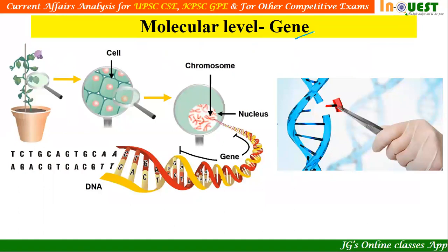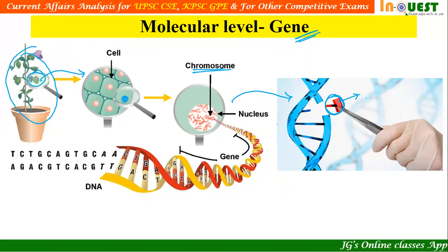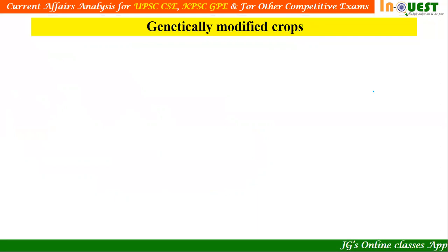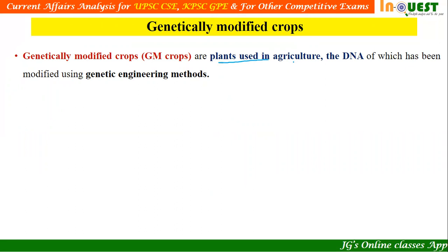Our interest is the gene of a particular character. Starting from the macro level: a plant has leaves, leaves have millions of cells, each cell has its own nucleus, each nucleus has a chromosome, and the chromosome is made of DNA. DNA contains a number of genes. These genes actually code for particular characters, and we need to isolate the gene of our interest that codes for a specific character. This kind of experiment is called genetic modification of crops.